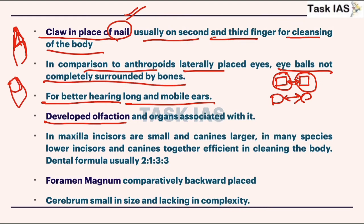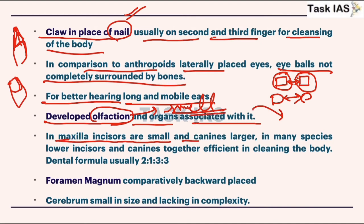Prosimians lack that superior protective feature. For better hearing, long and mobile ears are developed. They have developed olfaction and organs associated with it, meaning they focus more on smell. Stereoscopic vision is not that developed in prosimians. In the maxilla, incisors are small and canines are larger, showing some kind of primitive features.